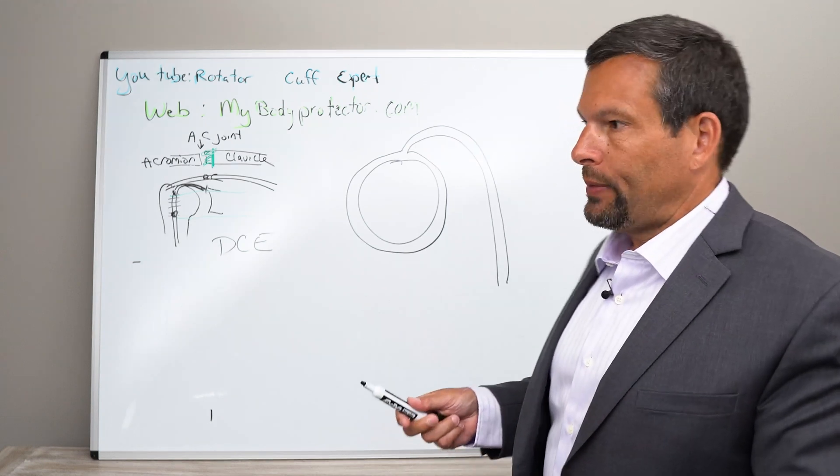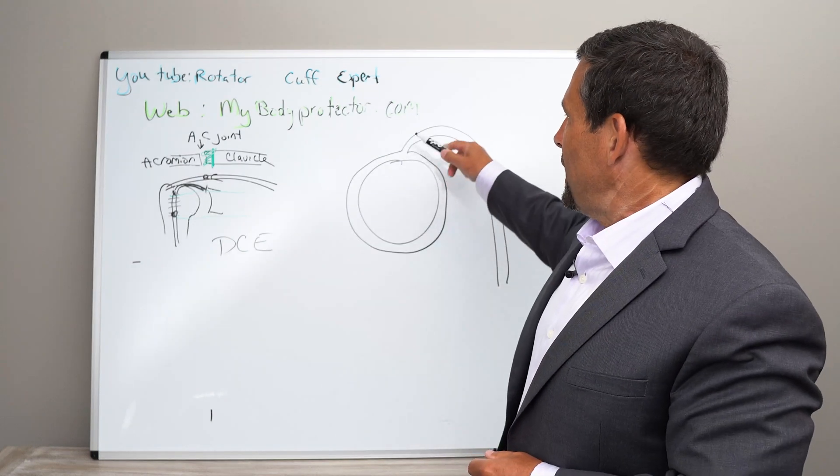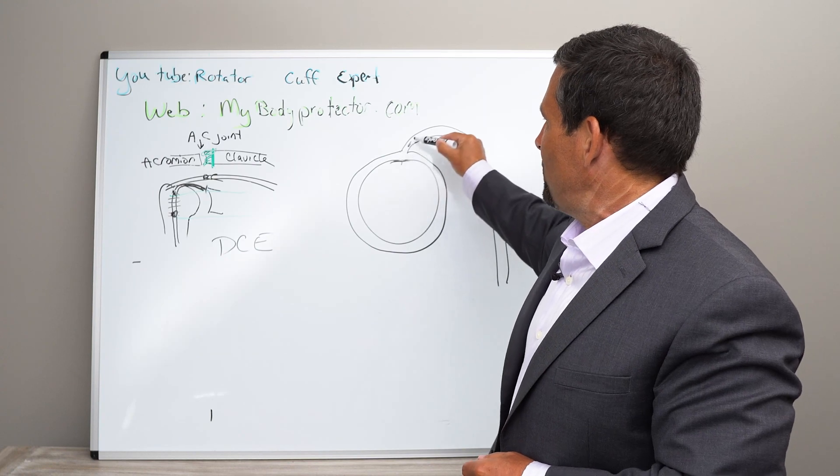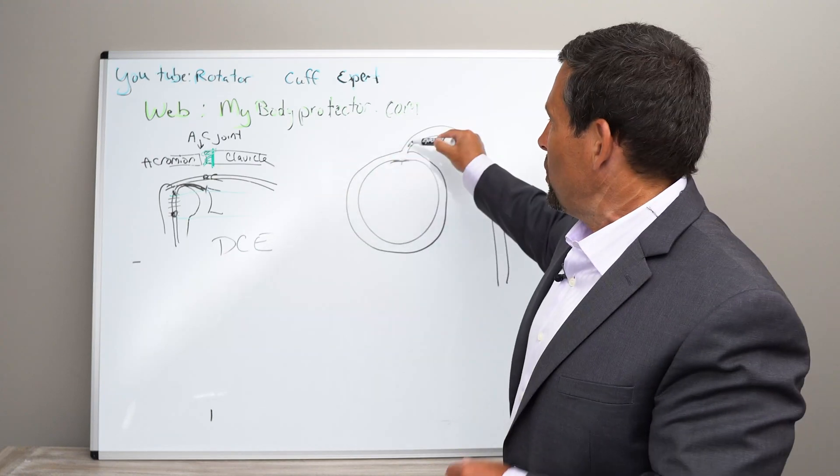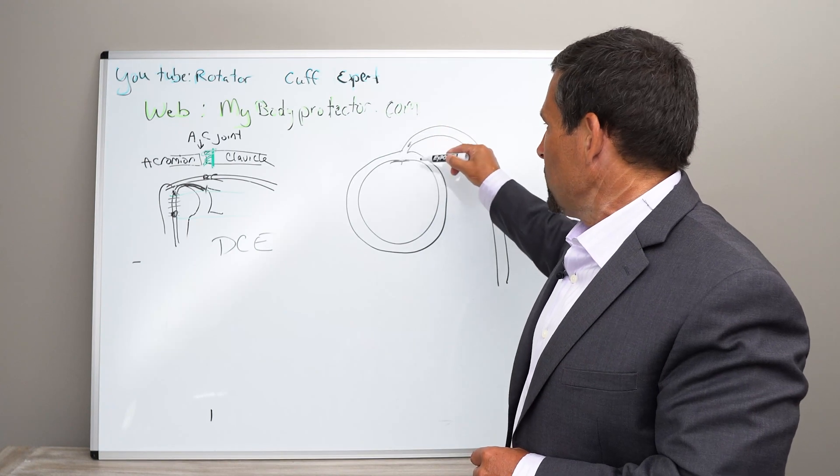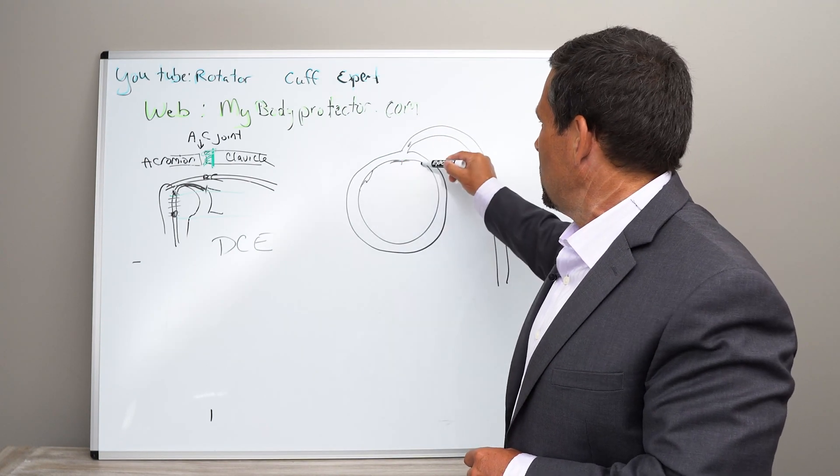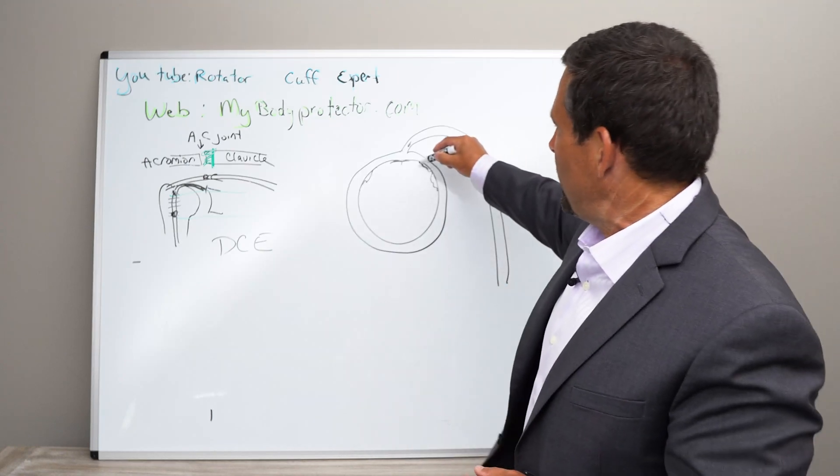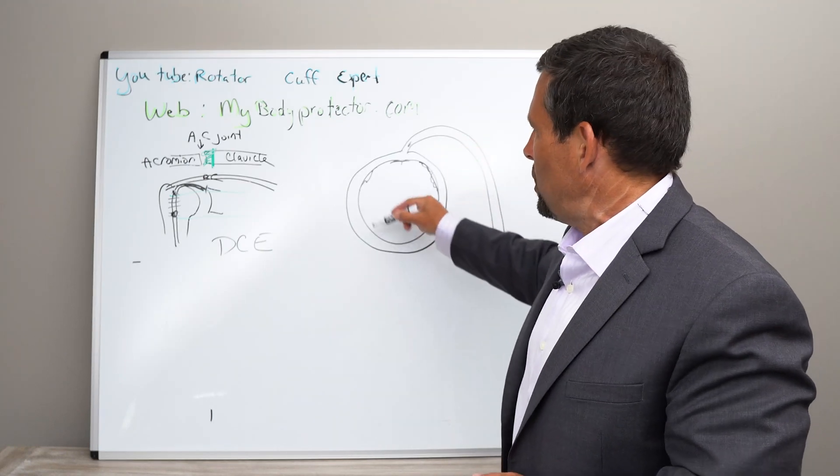So there's different kinds of labral tears. We may have damage to the biceps here, to the biceps anchor where the biceps attaches to the labrum. We may have some fraying of the biceps, or we could have different kinds of biceps tears where we have a big tear in the front or below or in the back.